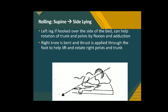During this, the side towards which the person is turning — in our example, the left side — the left leg is hooked over the side of the bed, and it helps rotation of the trunk and pelvis by flexion and adduction at the hip joint. The right knee, which is opposite from the side towards which we are rolling, is bent and flexed from hip and knee, and a push or thrust is applied so that the right side pelvis and trunk is lifted and assisted in rolling towards the left side.